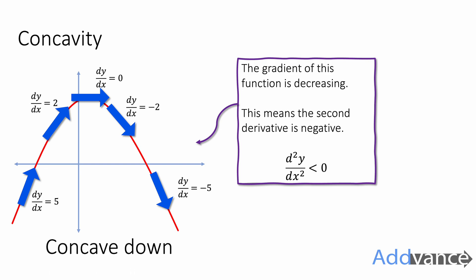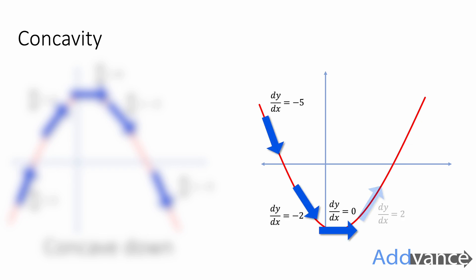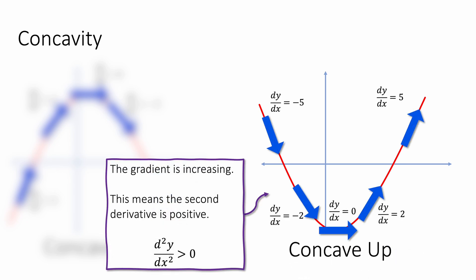The second derivative will be negative because the gradient is decreasing. We call this concave down, where the curve is bending downwards. Or we can have a curve where the gradient starts at minus 5, then minus 2, then 0, then 2, then 5, gradually bending upwards. Here the gradient is increasing — going from negative to zero to positive — so the second derivative will be positive. This is called concave up.